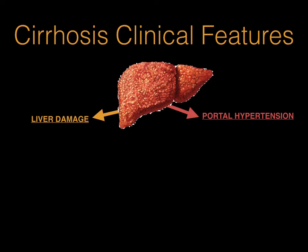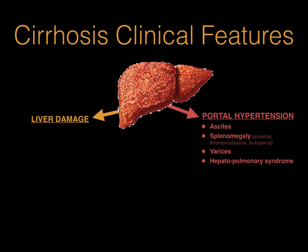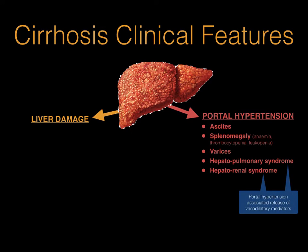This video explains the following clinical features of portal hypertension: ascites, splenomegaly and its effect on the blood cells in the body, varices, hepatopulmonary syndrome, and hepatorenal syndrome — both thought to be related to the portal hypertension associated release of vasodilatory mediators.